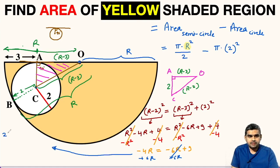Adding 6R to both sides, we get 2R equals 9, so R equals 9 divided by 2, which is 4.5 units.